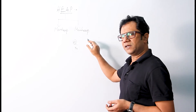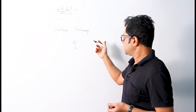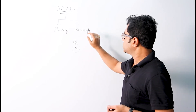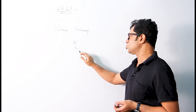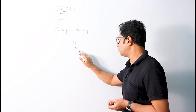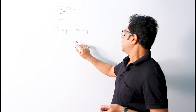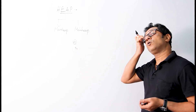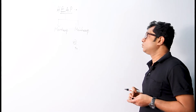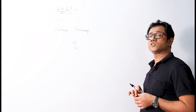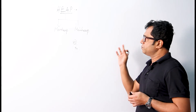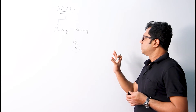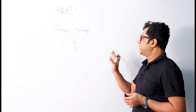Min Heap is similarly defined but in the other direction — if a heap is to be a Min Heap, then each node N of the heap H is always less than or equal to its children. That is called the Min Heap.